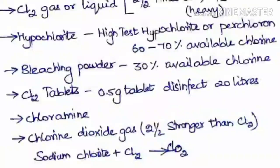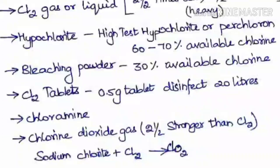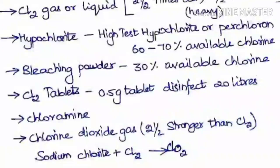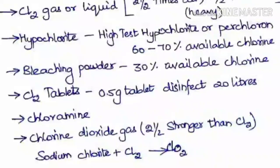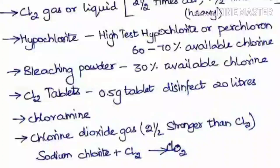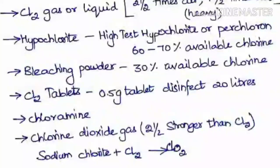Cl₂ tablets are also widely used — nearly 0.5 grams of tablet is enough to treat 20 liters of water. Chloramines can be directly added to the water for better treatment. Chlorine dioxide gas is produced by treating chlorine with sodium chlorite and is nearly two and a half times stronger than chlorine.